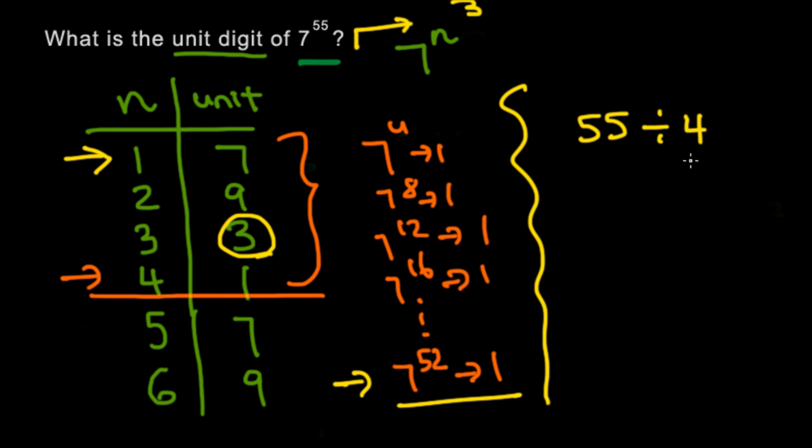So we divide this by 4, and this becomes 13 with a remainder of 3. That means that this group repeats 13 times, so by the 52nd number, you will have a unit digit of 1. But you have a remainder of 3, so you count from the top until you get to this 3 right here.